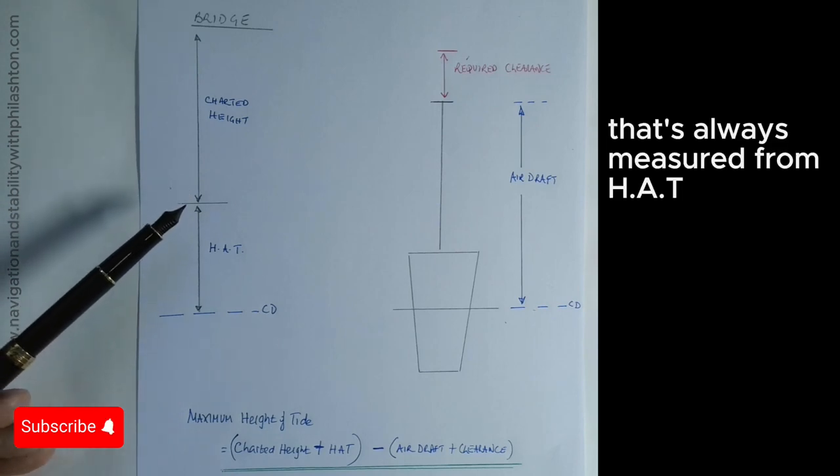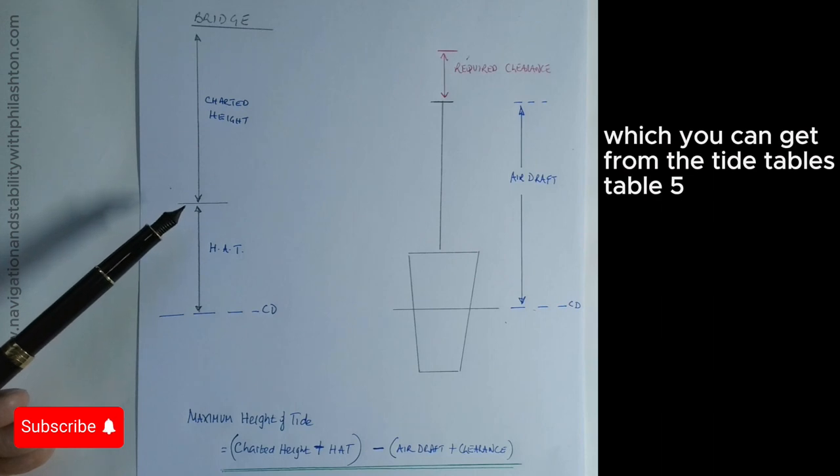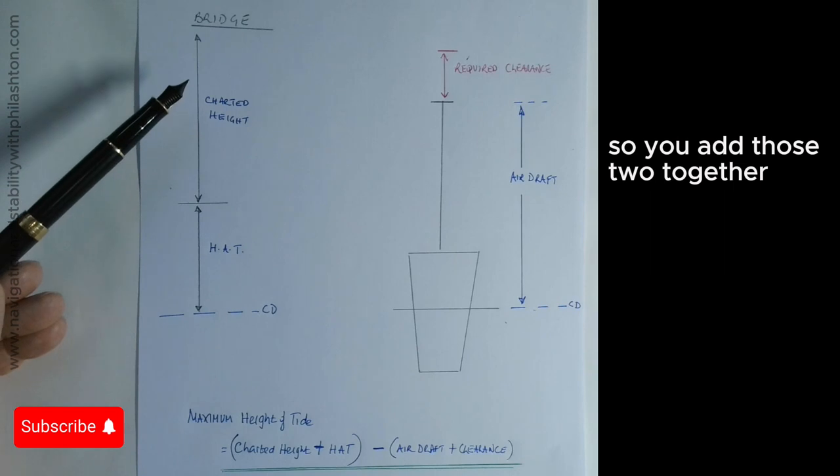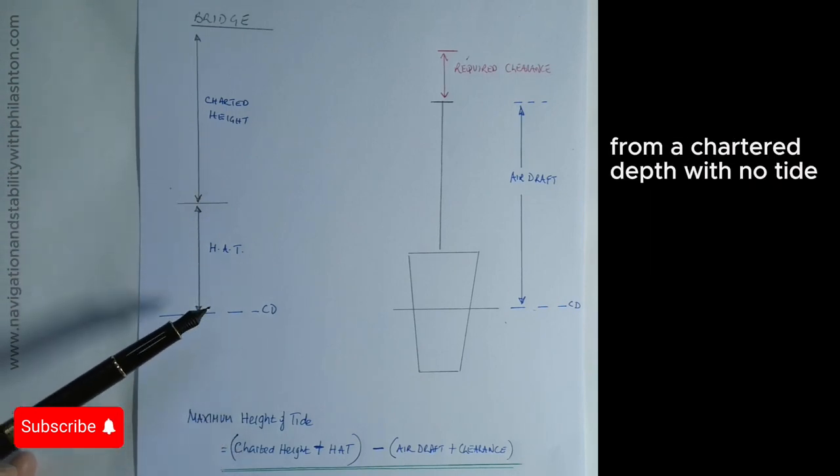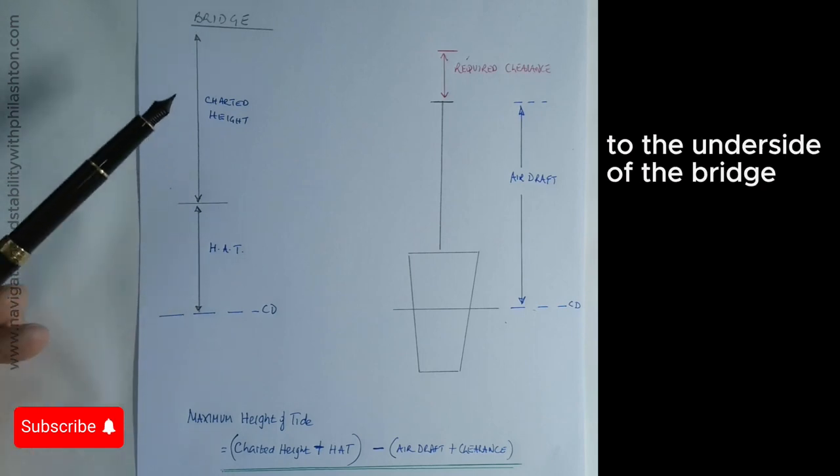That's always measured from HAT, which you can get from the tide tables, table 5. So you add those two together, and that's the maximum height from the charted depth with no tide to the underside of the bridge.